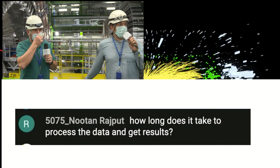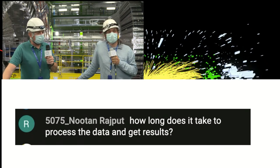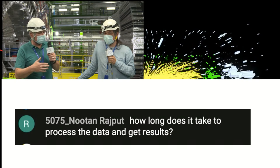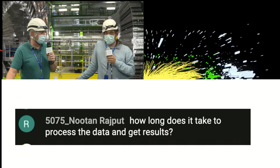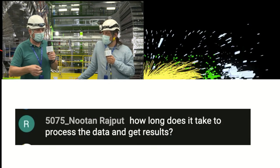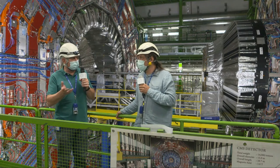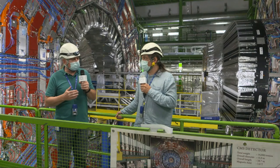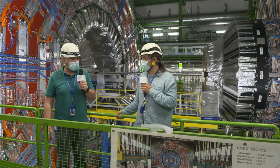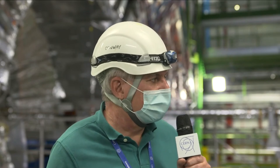Regarding how long it takes to process data and get results: once a run lasting many months is complete, we try to keep up with the data during the following year when beams come back on. But that takes millions of processing cores working full time. There's also calibration and simulation to be done. For the data collected through 2024, there will probably still be papers coming out with analysis in 2028 or so — it really takes many years. The first level processing happens almost keeping up with the data, and a few months after stopping it's mostly caught up.